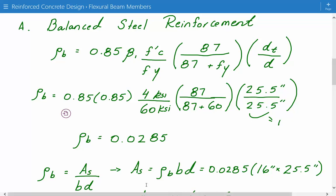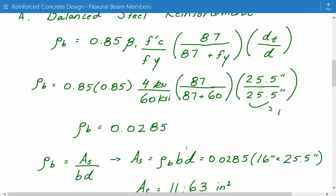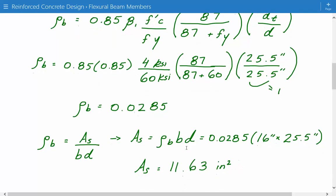We know the ρb that we just calculated and we know B and D, so we can calculate the area of steel required for this balanced condition. 0.0285 times 16 inches times 25.5 inches, and the area of steel for the balanced condition that we need is 11.63 inches squared.